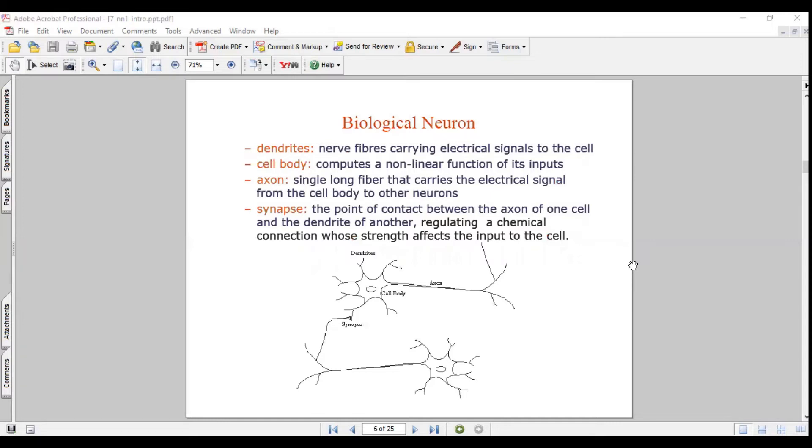You can see the diagram, the biological neuron. The terms are dendrites, cell body, axon, and synapse. These are the terms that are part of the biological neuron. Dendrites are nerve fibers carrying electrical signals to the cell. Cell body computes a non-linear function of its input. Axon is a single long fiber that carries the electrical signals from one cell body to other neurons. Synapse is the point of contact between the axon of one cell and the dendrite of another, regulating a chemical connection whose strength affects the input to the cell.